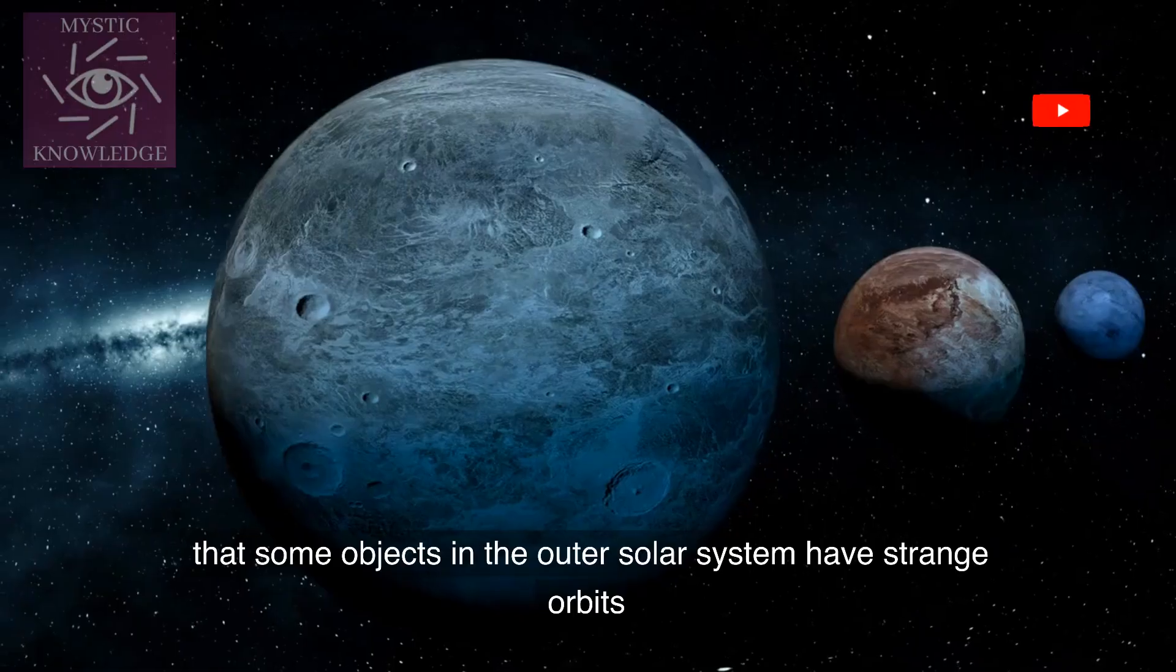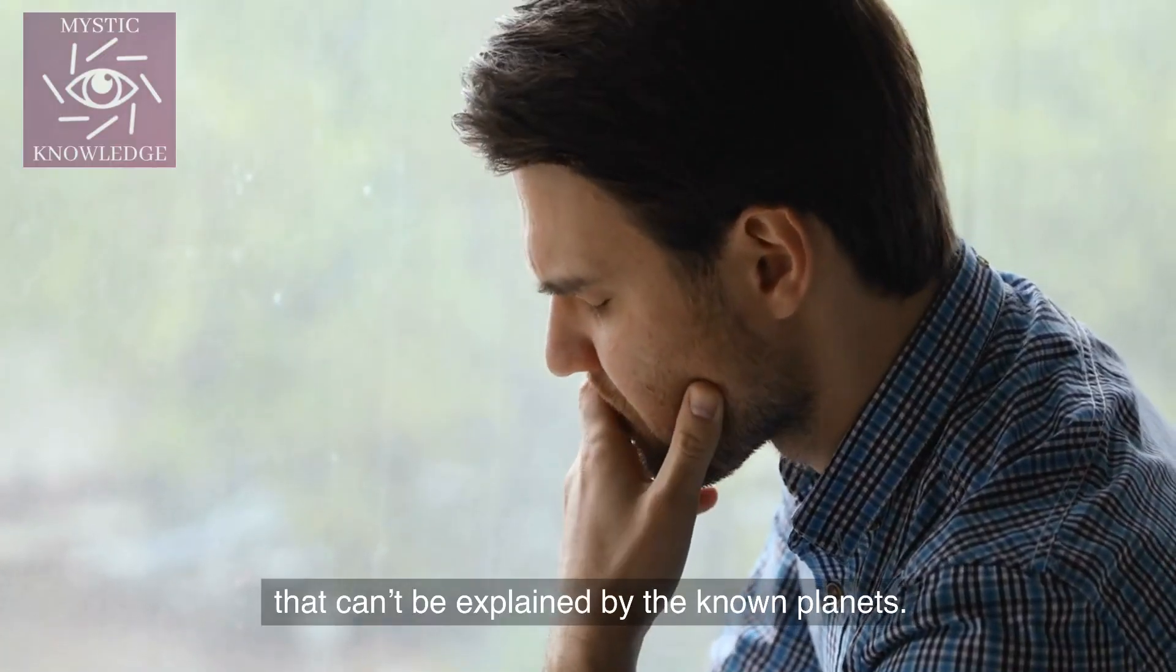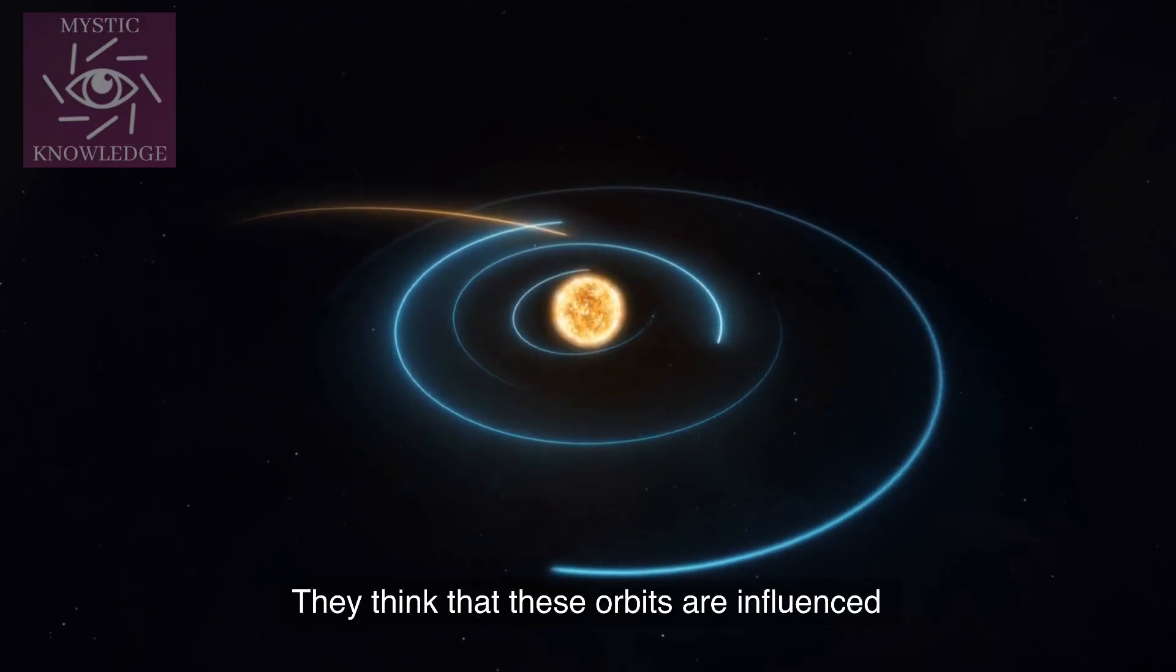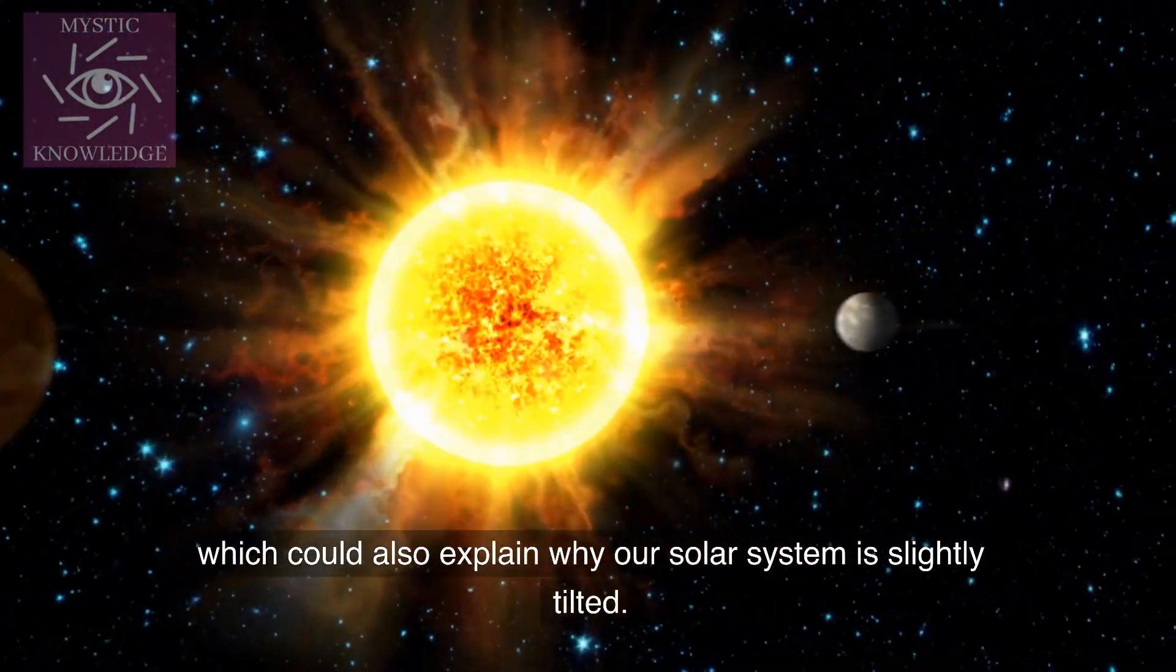Some astronomers have noticed that some objects in the outer solar system have strange orbits that can't be explained by the known planets. They think that these orbits are influenced by the gravity of an unseen planet, which could also explain why our solar system is slightly tilted.